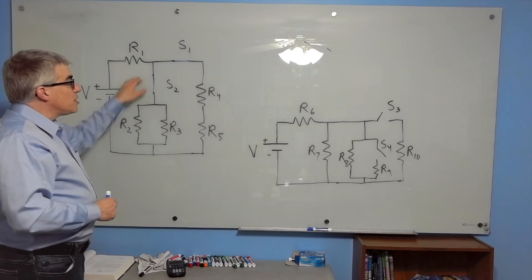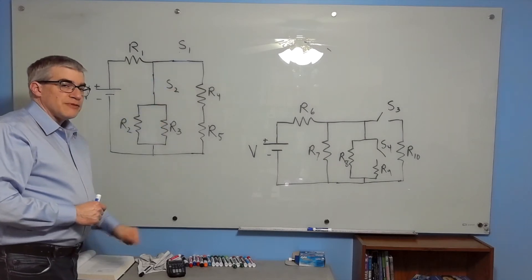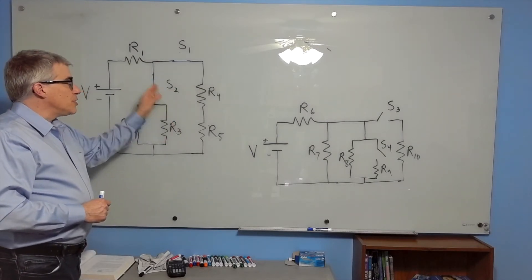A trickier question is, what happens to R4 and R5? Do they get brighter or dimmer when switch two closes?